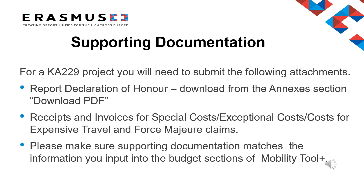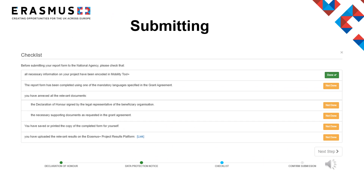For call 2020 KA229 applications, the virtual addendum was attached to Annex 3 as part of the contractual agreement and is not required as a separate document for this call. There is a size limit, so please make sure all documents related to project results are uploaded to the project results platform and not within the Mobility Tool Plus. Once you have uploaded all supporting documents, read the data protection notice and select Accept. Go through the checklist carefully — when you are satisfied you have completed each step, click the Not Done button to Done, which should turn green. Once you have completed the checklist, select Next Step.